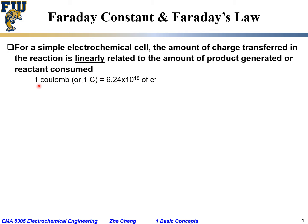We know that 1 Coulomb is 6.24 times 10 to the power of 18 electrons — that is 1 Coulomb, this many electron charges. From here, we get that the charge for 1 electron is 1 over 6.24 times 10 to the 18 Coulombs. So this is the relationship between Coulomb and the electron charge. If we represent the electron charge in Coulombs, this is what we get.